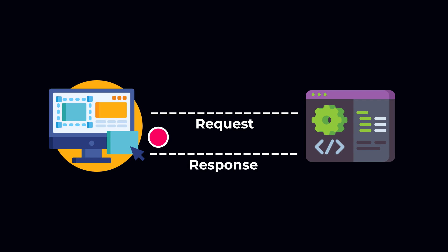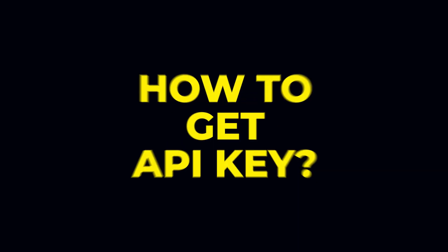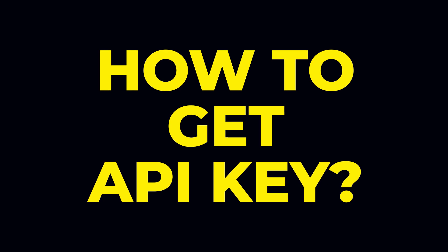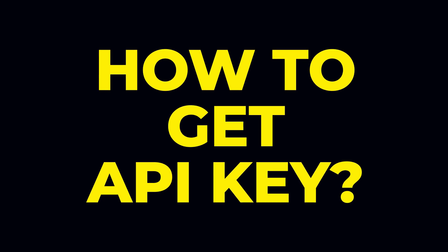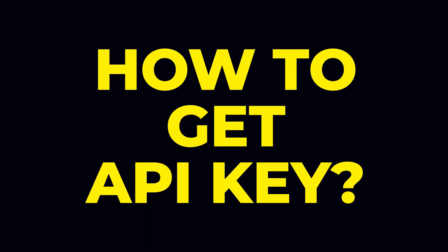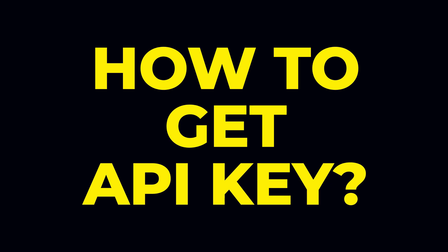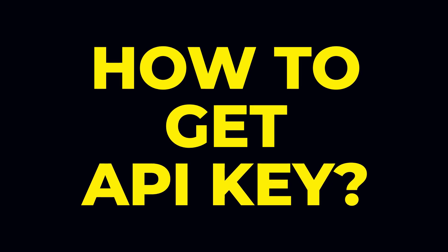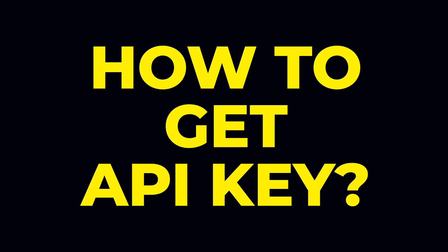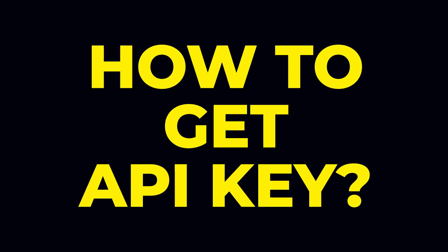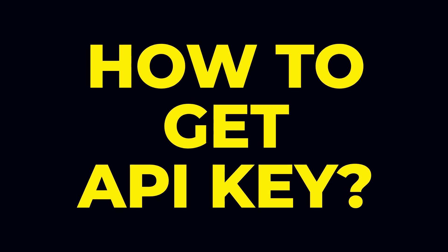You might ask: how can we get an API key if we want to access a public API? To get an API key, we have to register on the website of the company providing the API, and they will send us the API key. So I hope you now understand what is API.